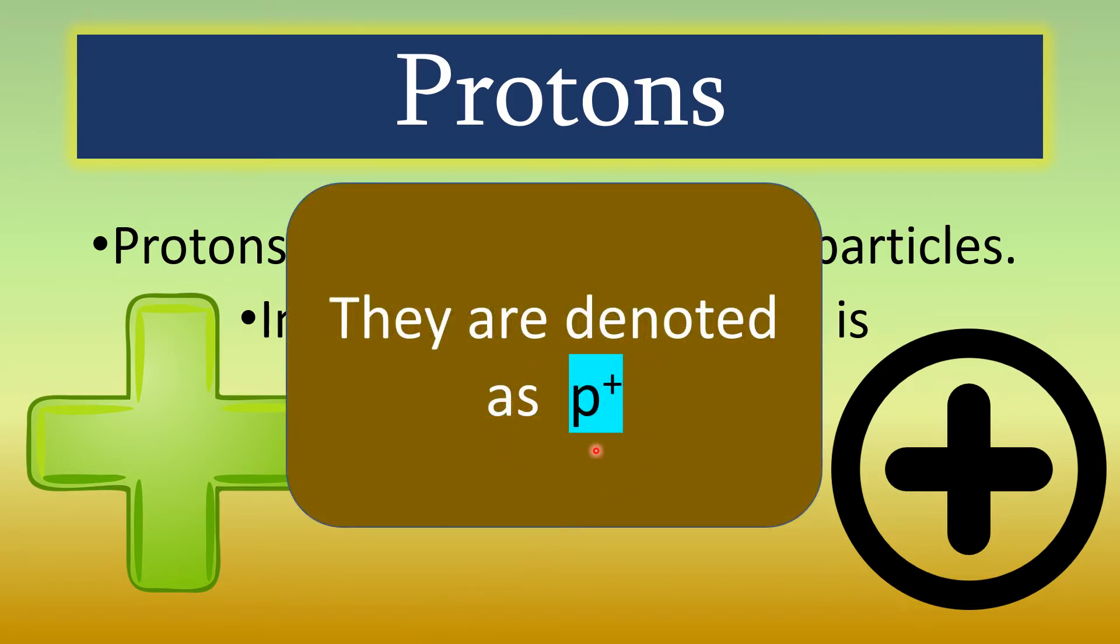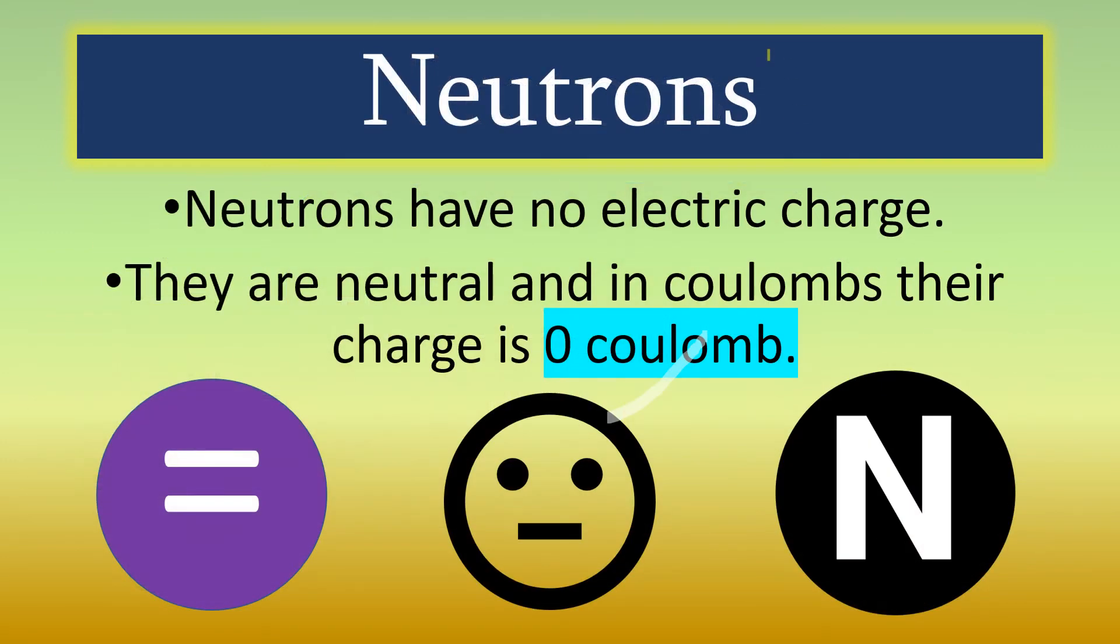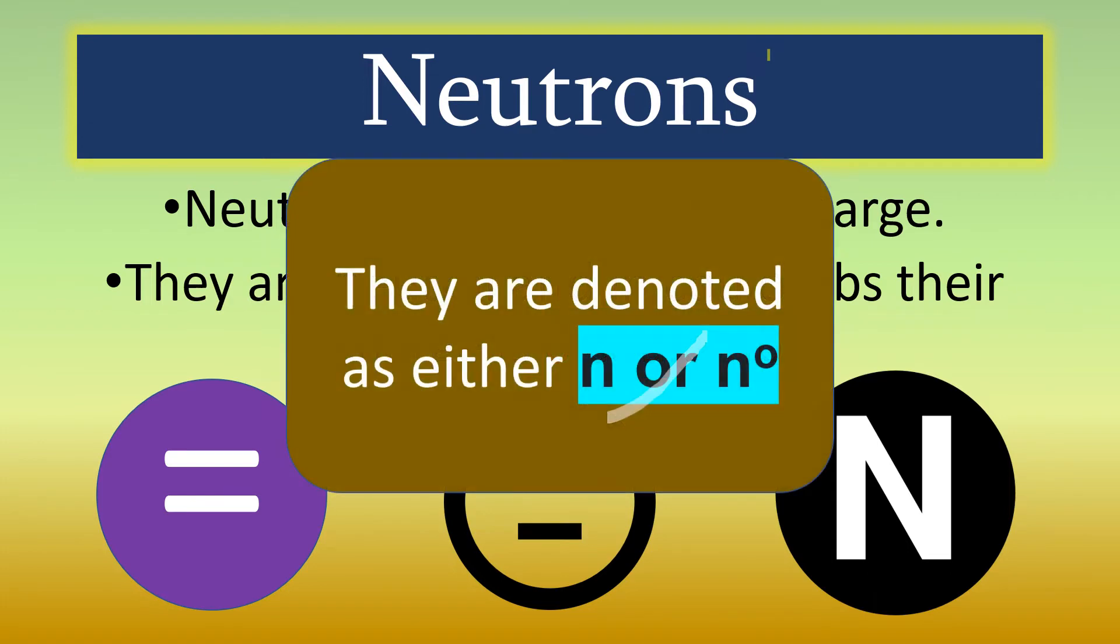Protons are denoted as P+. Neutrons, on the other hand, have no electric charge. They are neutral and in coulombs, their charge is 0 coulombs. This is how neutrons are denoted.